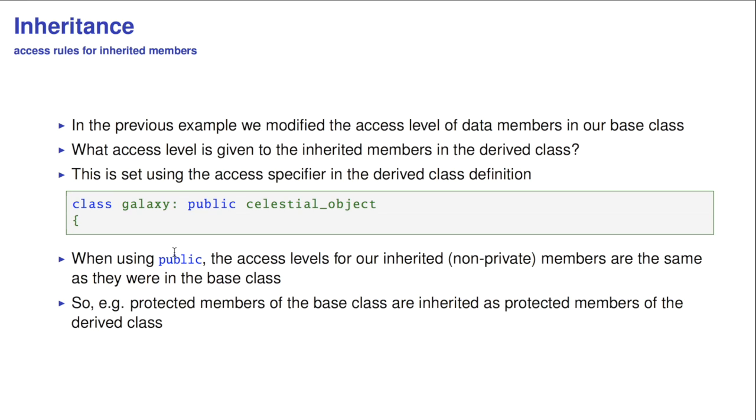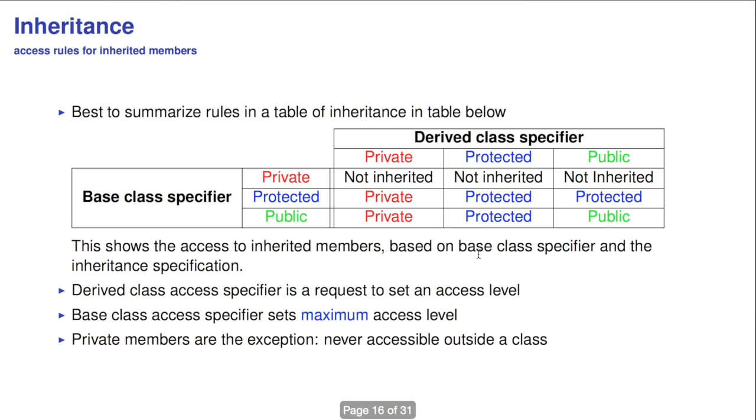So, it's fine to do that, but essentially we modified the access level of the data members in the base class. But, there's also a statement here, the public, in the inheritance statement. So what access level is actually given to these inherited members in the derived class? How does this work? It's a combination of the two. When using public, the access level of our inherited non-private members are the same as they were in the base class. So, protected members of the base class are inherited as protected members of the derived class.